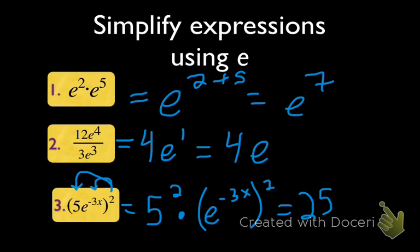And then e to the negative 3x raised to the second. Well, these two things up here are going to be multiplied. So 2 times negative 3x, that's e to the negative 6x, right? Power to a power, we multiply.